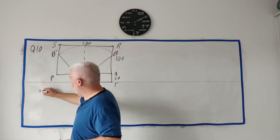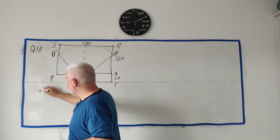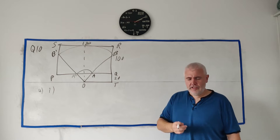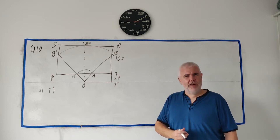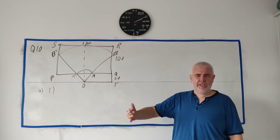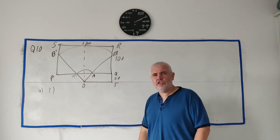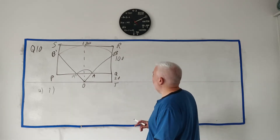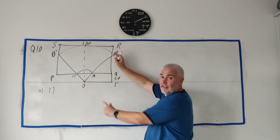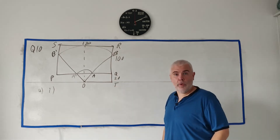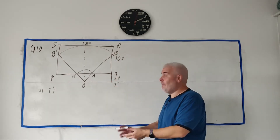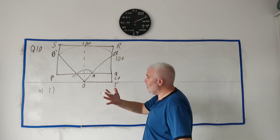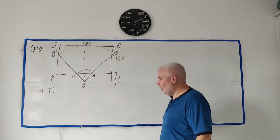Parts 1 and 2 ask a question but also give us the answer — that's so we can do the later parts as well. Part 1 says show that OB = 120. So OB is this length here; they want us to find it but they tell you what it is so you know if you're on track.